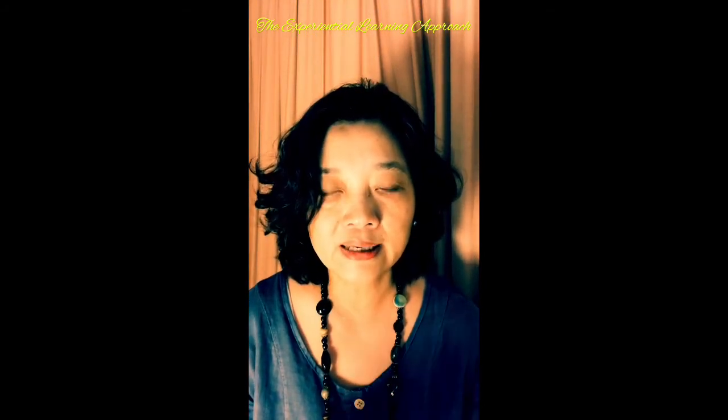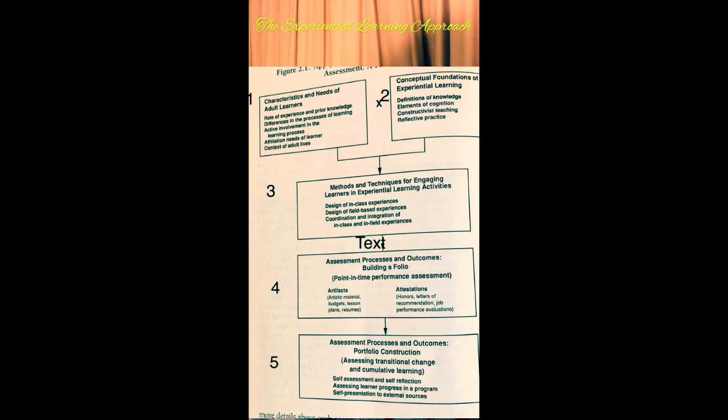The first section presents examples of how to apply the model to a variety of adult learning situations. Two examples will be discussed: Part A — diversity learning, and Part B — teacher preparation.